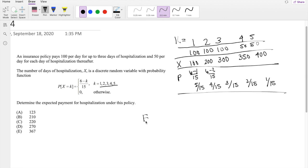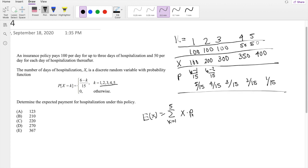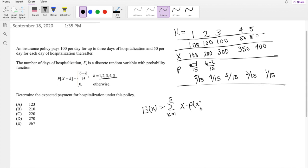As always, our expectation is just the sum, summing it up from K equals one to five, summing up X times the probability of X.